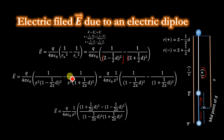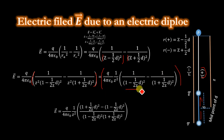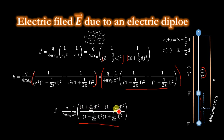Taking the common factor 1/z² from the whole expression and then finding the LCM, we get E = k(1/z²) × [(1 + d/2z)² − (1 − d/2z)²] / [(1 − d/2z)²(1 + d/2z)²].